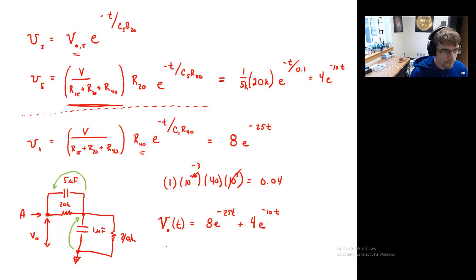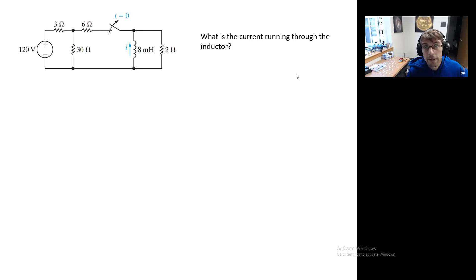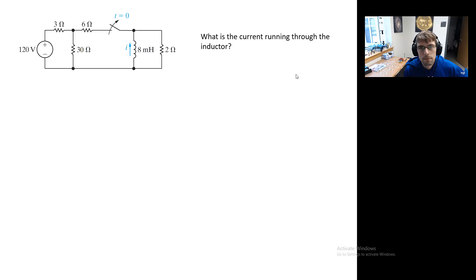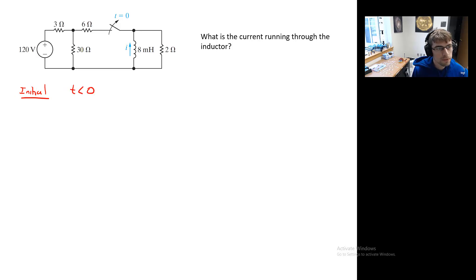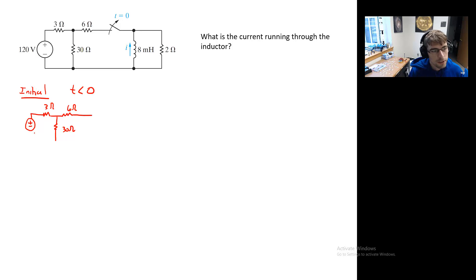Let's get some more practice with the inductor. Take a moment and figure out what's the current running through the inductor after the switch is opened. Let's consider first the initial situation — time less than zero. At time less than zero, we have our potential supply, our 3 ohm resistor, 6 ohm resistor, and 30 ohm resistor. We need to ask: what's the behavior of an inductor when it's fully charged? A fully charged capacitor acts like a break in the circuit. An inductor acts like a wire.